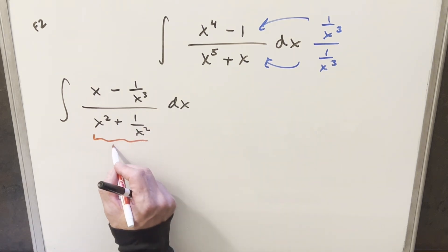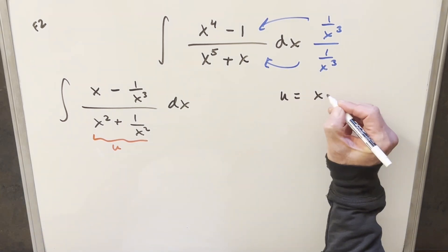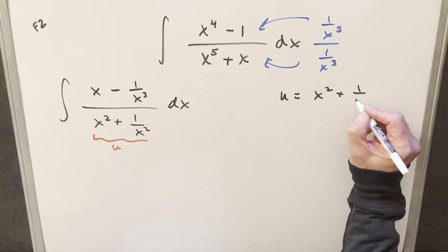And then I want to just try a u substitution, making this my u. So let's see how this is going to work. We'll come over here. We'll say u is equal to x squared plus one over x squared.